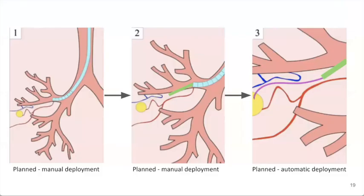The procedure can be broken down into three stages that correspond to the three system components I showed on the previous slide. There's manual deployment of the bronchoscope, manual deployment of the piercing stylet, and then automatic deployment of the steerable needle.